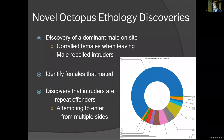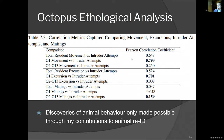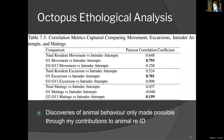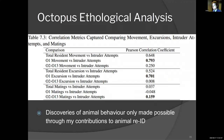We can see the number of excursions — the number of times an octopus left the site — and O1, that dominant one, just dominates the activity on site. We can look at the Pearson correlation coefficient between O1's movement versus intruder attempts: there's a very high correlation between O1's movement and intruders, with less of a correlation with the other ones. Considering excursions — when they totally leave the site to chase someone away — there's an extremely high correlation with intruder attempts and O1's excursions versus no correlation for the other octopus. Interestingly, mating attempts for O1 show a slight negative correlation versus a slight positive for the other octopus on site — so when O1 was busy, the other octopus were a little more active. These are discoveries only made possible through my contributions to animal re-ID.